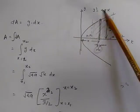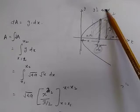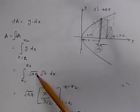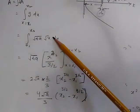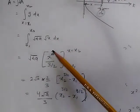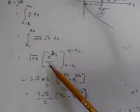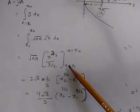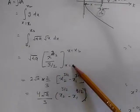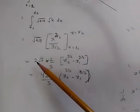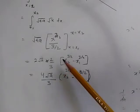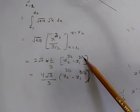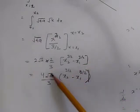We know y squared is equal to 4ax, so y is equal to the square root of 4ax, written as square root of 4a times x to the power of 1/2. When integrated, x to the 1/2 gives x to the 3/2 divided by 3/2. With limits from x1 to x2, and simplifying — square root of 4 is 2, 3/2 becomes 2/3 — the result is 4 times square root of a divided by 3, times (x2 to the power 3/2 minus x1 to the power 3/2).